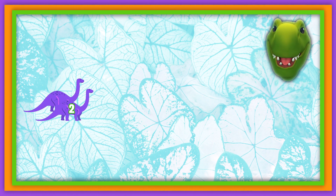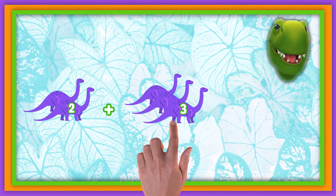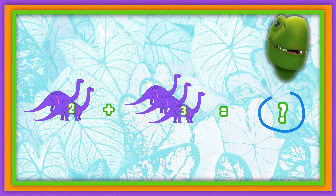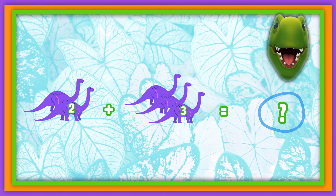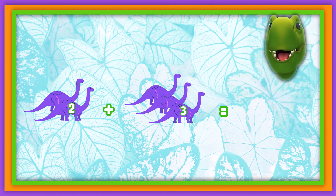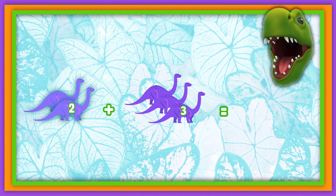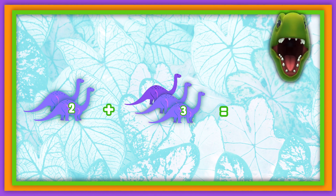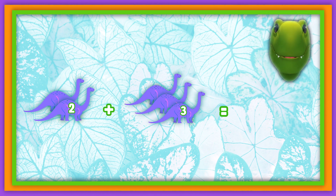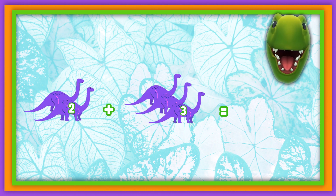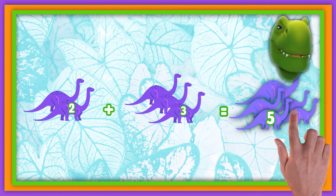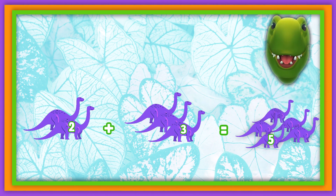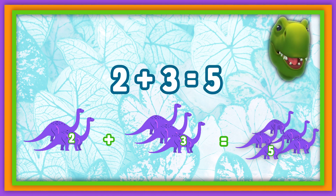Next, we have two dinos plus three dinos. How many do we have all together? Let's count. One, two, three, four, five. That's right, we have five dinos. Two plus three equals five.